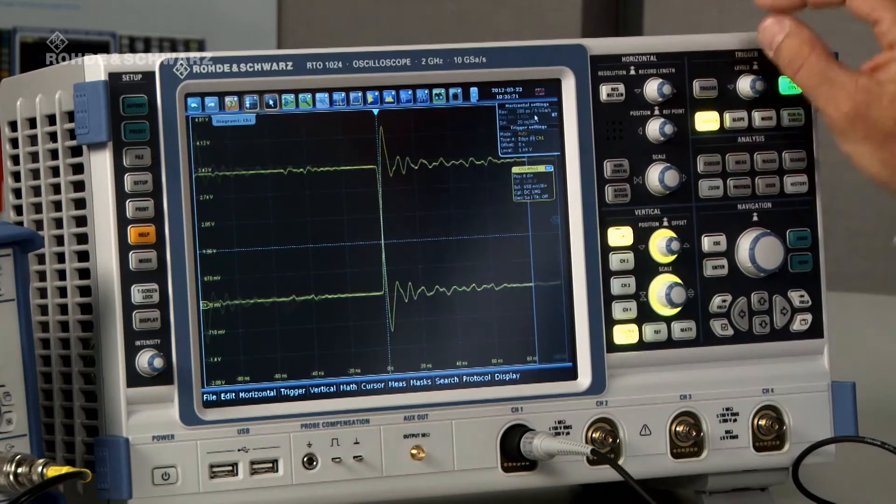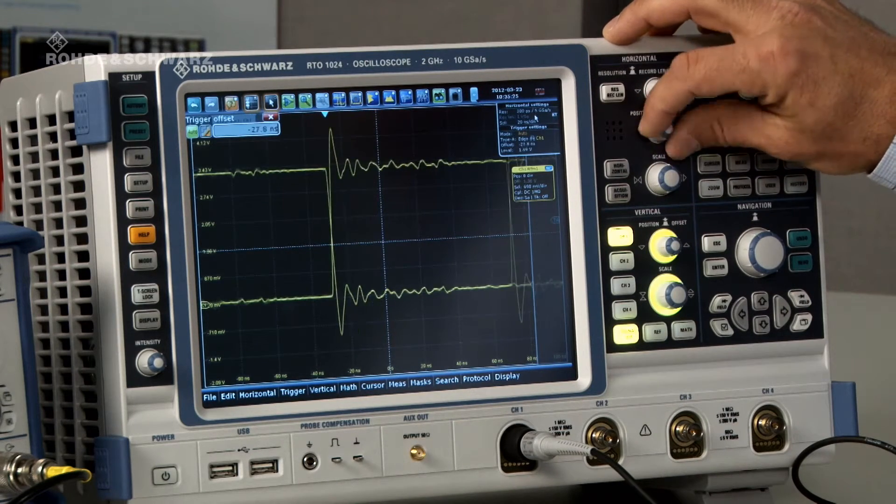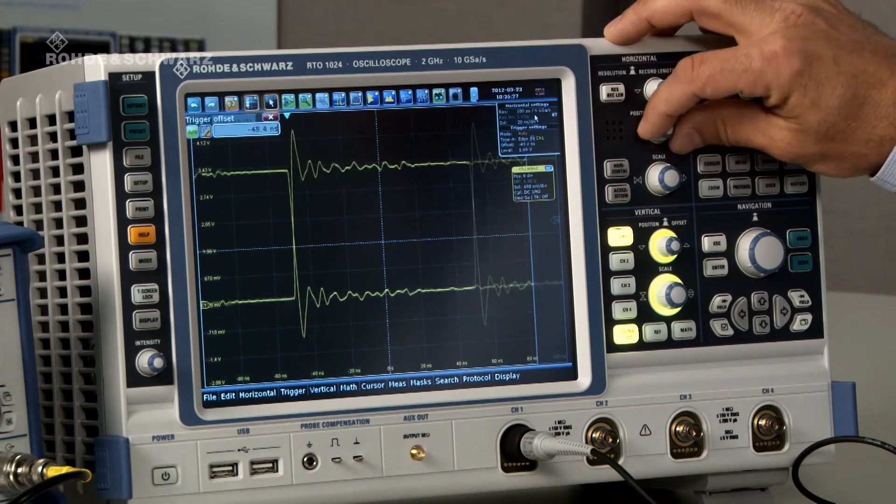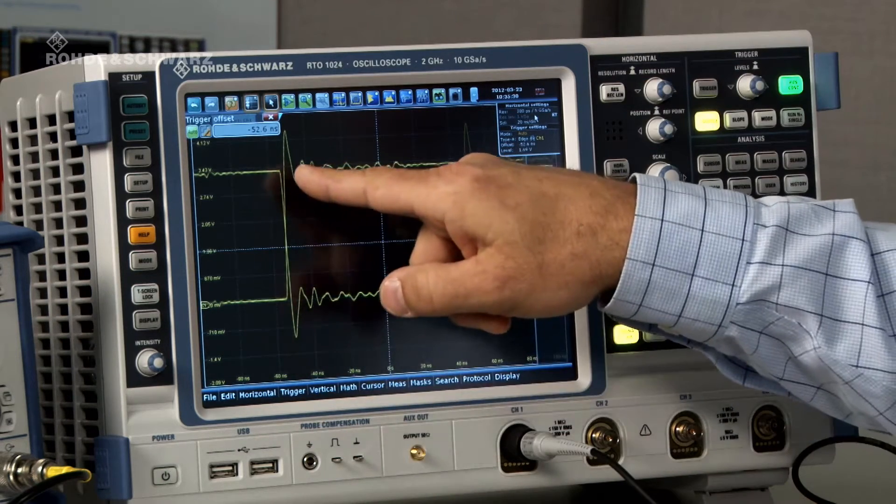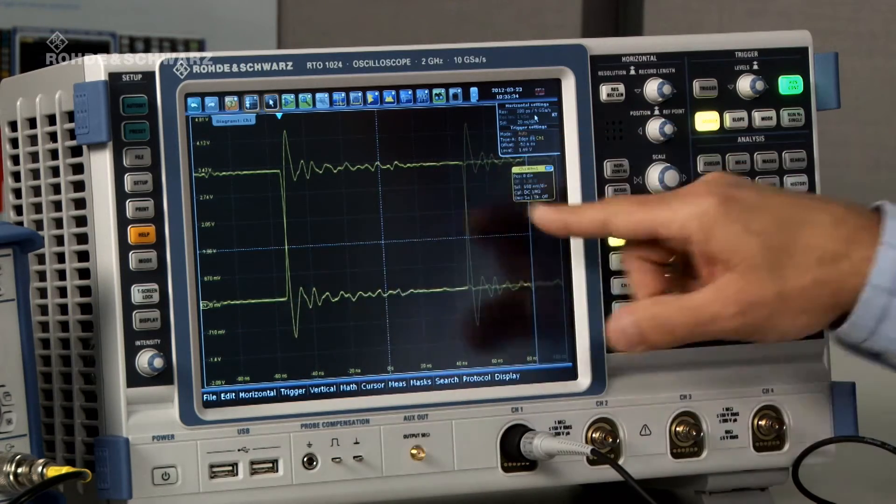Now I want to position this over on the screen a little bit farther to the left so that we can see two transitions on the screen. So now we're looking at one transition from 0 to 1 and then another transition from 1 to 0 and the opposite transition. This is what's known as a data eye pattern.